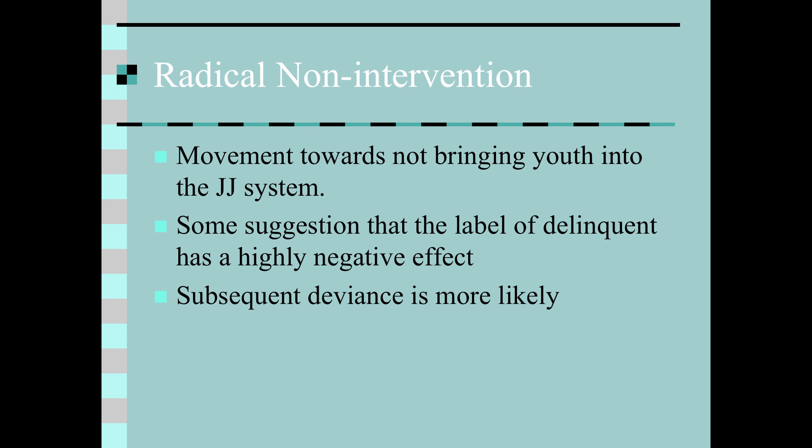The comparative slide referred to Schur and his ideas about radical non-intervention. Schur developed his theories of radical non-intervention in the 1970s, but more recently — meaning in the past decade — theorists have tested these theories and are finding more support for the idea that non-intervention is justified. Findings indicate that prior juvenile court dispositions exerted a significant impact on current dispositions, even with the control of relevant variables.